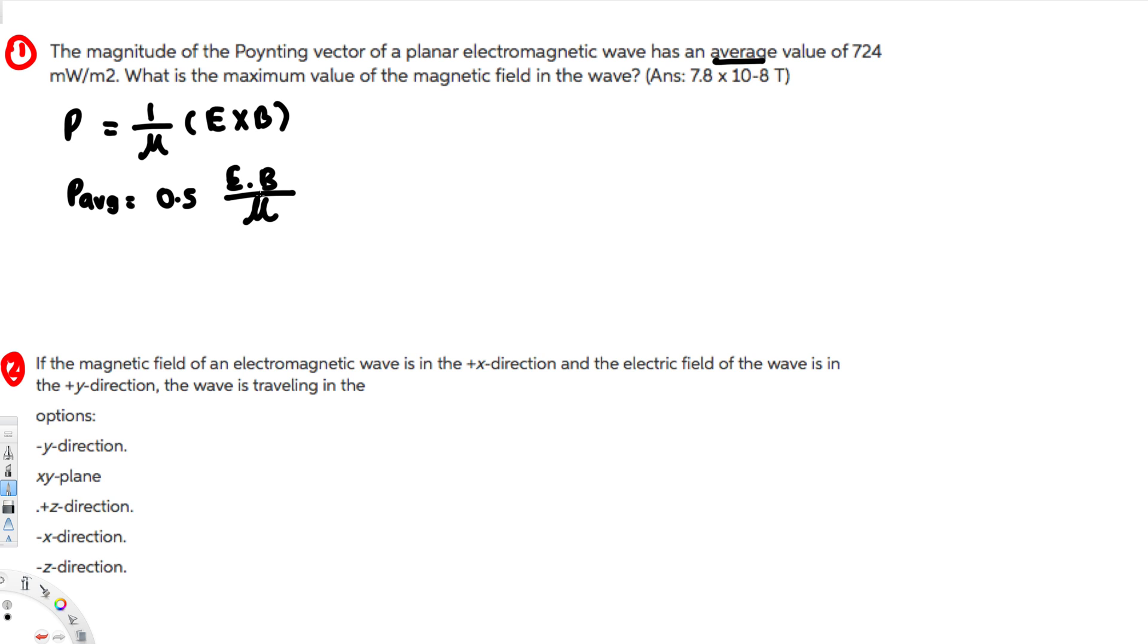Now here we are trying to find B, but electric field is not provided, right? So we only have μ is permeability constant. So we know that P average is here, so 724, but electric field is not provided, so we had to do something about that.